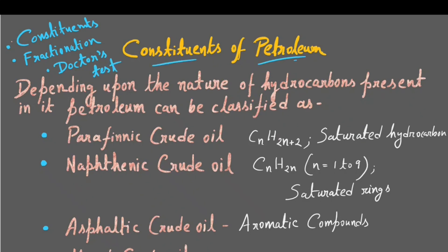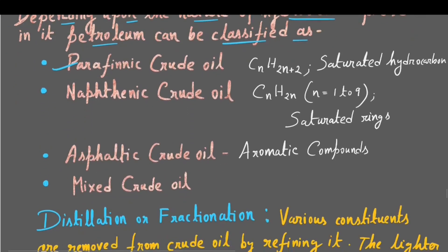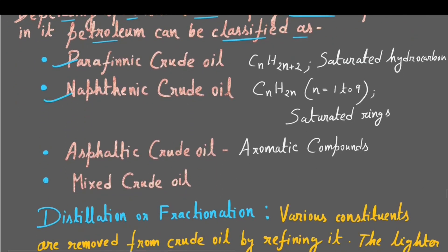The crude petroleum oil is made up of many constituents and most of them are hydrocarbons. Depending upon the nature of those hydrocarbons present in petroleum, it can be classified as either paraffinic crude oil. Paraffinic crude oil means the major component should be saturated hydrocarbons, that is alkanes, and the general formula of alkanes is CnH2n+2, where N is an integer.